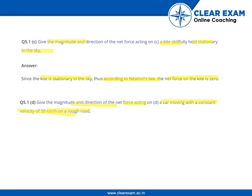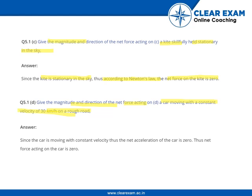Give the magnitude and direction of the net force acting on a car moving with a constant velocity of 30 km per hour on a rough road. Since the car is moving with constant velocity, the net acceleration is zero. Thus the net force acting on the car is zero.